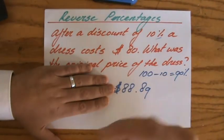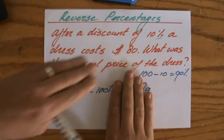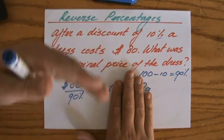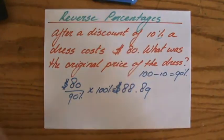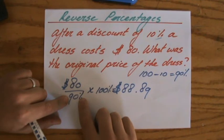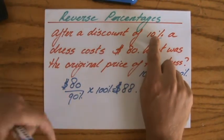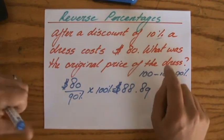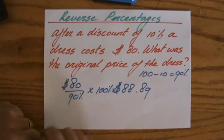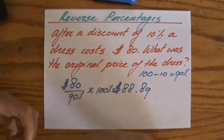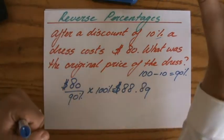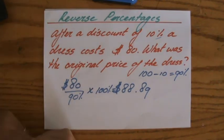That was before, but now they say the price after the discount is $80 and that's a discount of 10% — what was the original price? So with reverse percentages you're working backwards. You find that the price is 90% of the original price. If the discount were 15%, you'd do 100 minus 15, giving 85% of the original price. But here it's 90%, so divide by 90%, then times by 100% to get the original value: $88.89.